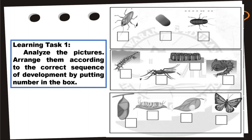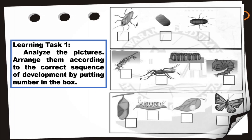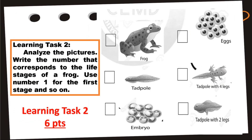For your activity, learning task number one: you are going to analyze the pictures, then arrange them according to the correct sequence of development by putting a number in the box. For learning task number two, write the number that corresponds to the life stages of a frog. Use number one for the first stage and so on.